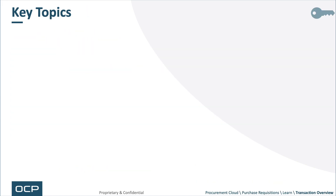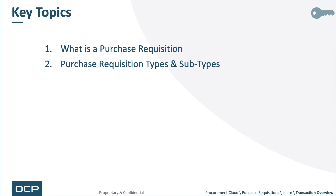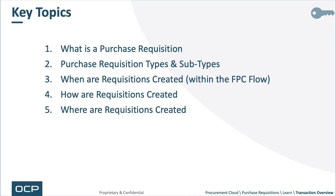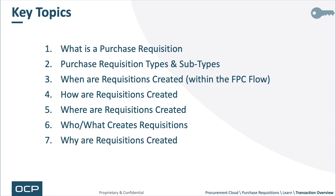Key topics are as follows: What is a purchase requisition? Purchase requisition types and subtypes. When are requisitions created — that's within the FPC or Fusion Procurement Cloud flow. How are requisitions created? Where are requisitions created? Who or what creates those requisitions? And finally, why are requisitions created? Let's get started.